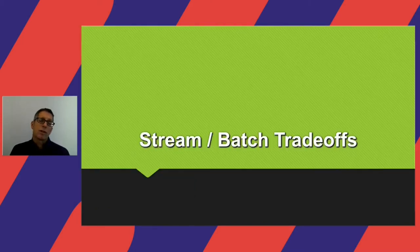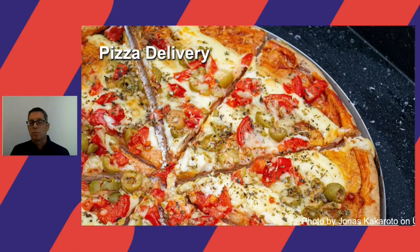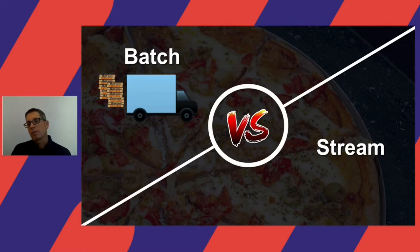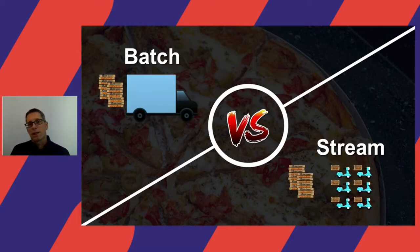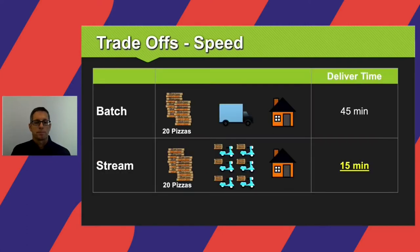Let's talk about stream versus batch trade-offs. To do that, I want to use an analogy we're all familiar with: pizza delivery. On the left we have batch, our new champion, using a pizza delivery truck to deliver pizzas in batch. On the right we have stream, our lightweight previous champion, which delivers pizzas using delivery scooters that can carry three to four pizzas each. The challenge is to deliver pizzas to a party at a house, and we'll compare the differences between each approach.